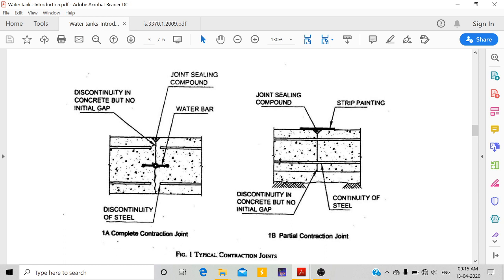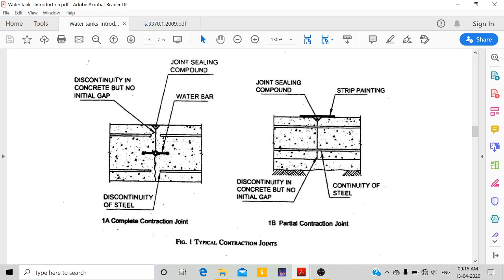Coming to those joints, we have typical contraction joints. If this is the portion of the tank vertical wall, you can see this is called a water bath. This is not continuous, so there is a water bath to continue these two elements. There you can have some joint sealant compound because there is a gap, and you can also have some strip painting.